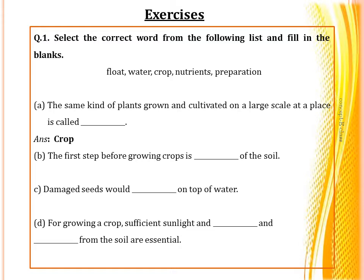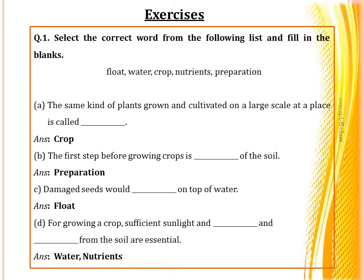The third question: damaged seeds would dash on top of water. When we put seeds in water, some float whereas some sink — damaged seeds become hollow and thus lighter, so they float on water. The fourth question: for growing a crop, sufficient sunlight and dash and dash from the soil are essential. The answer would be water and nutrients.